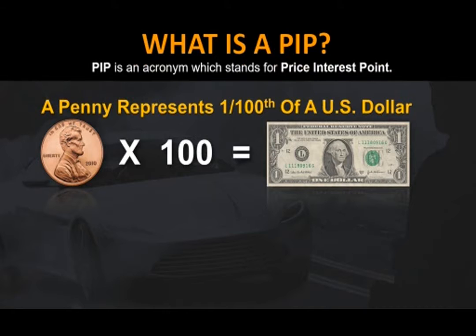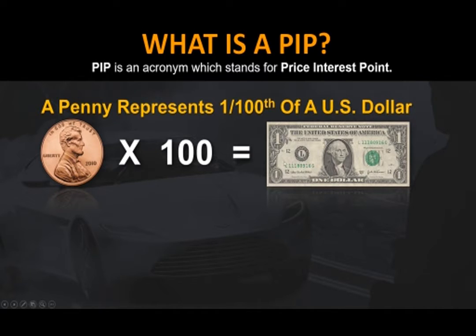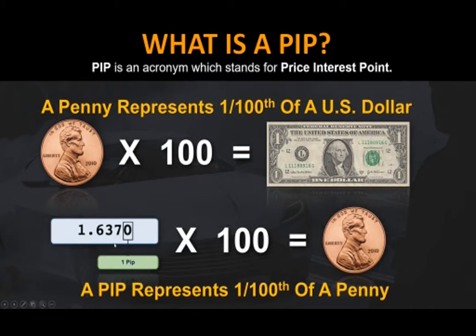Before we jump in, let me explain what we're trying to do in this market. We're trying to capture what are called PIPs — Price Interest Points. To make this simple: just as there are 100 pennies in a US dollar, a pip represents 1/100th of a penny. So just as there are 100 pennies in a dollar, there are 100 pips in a penny.